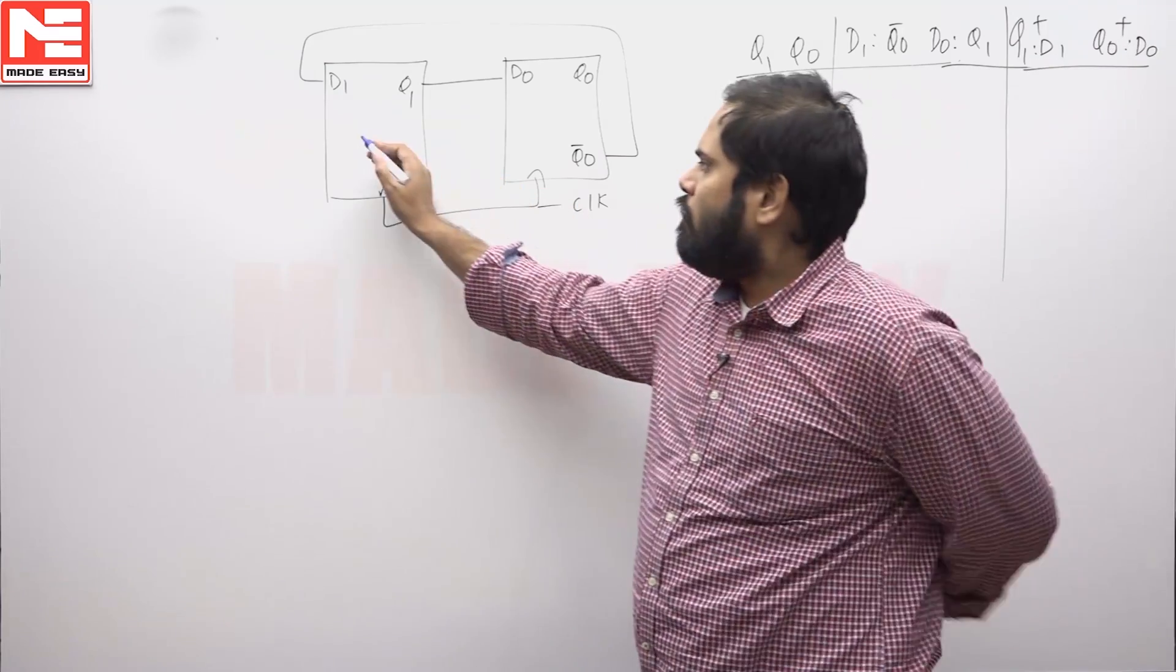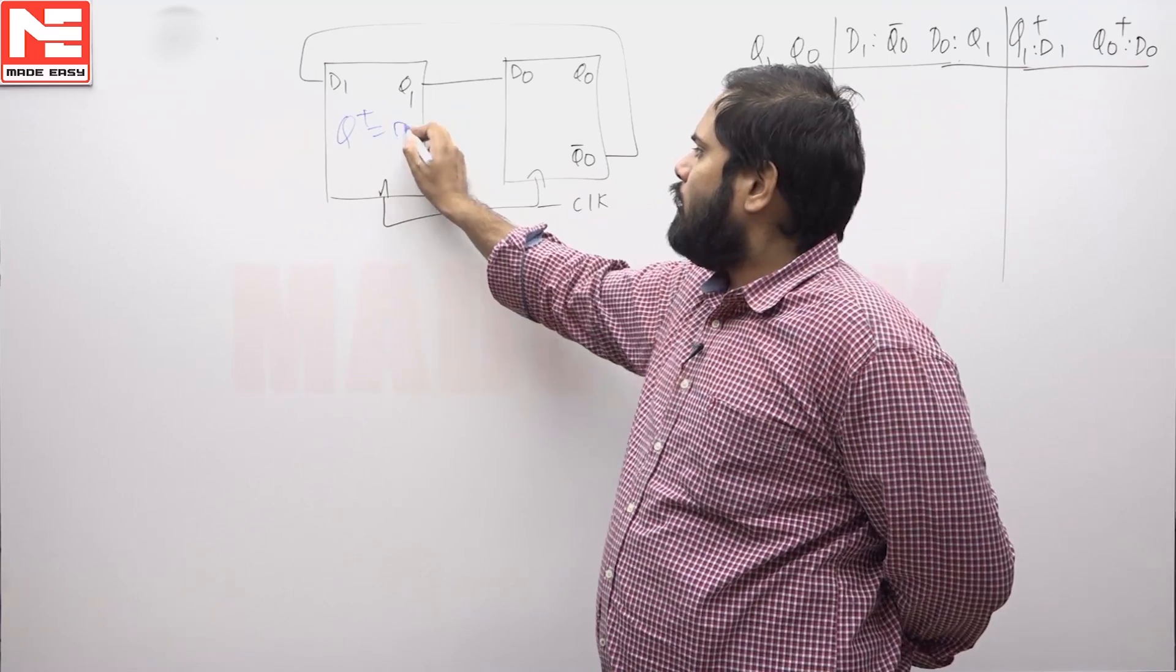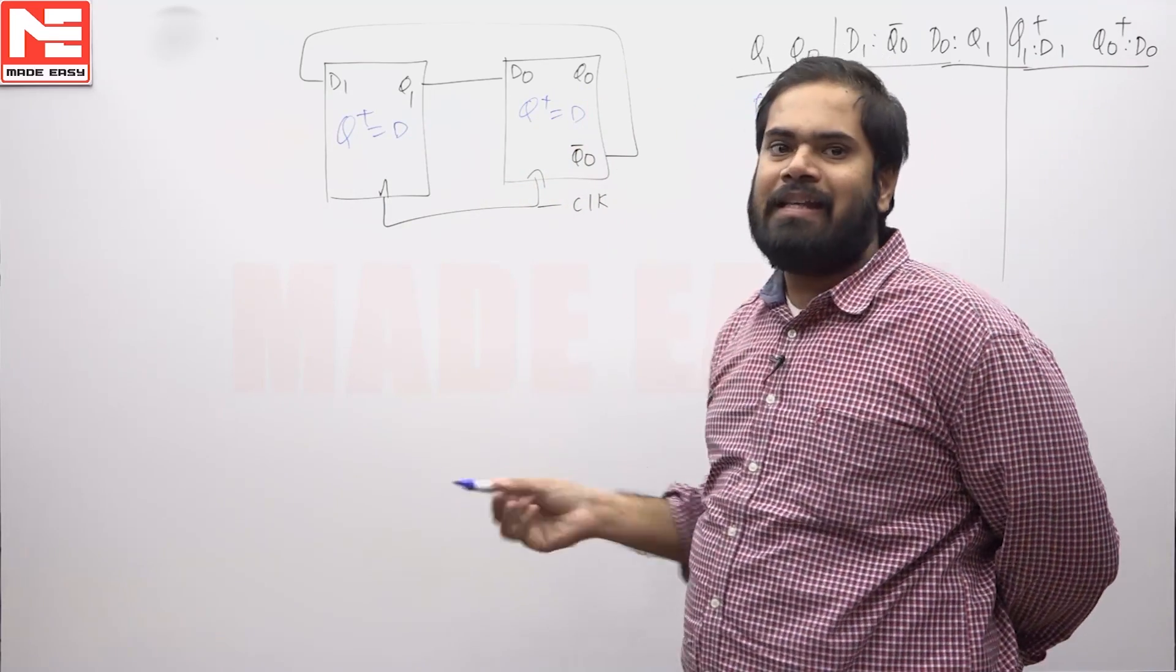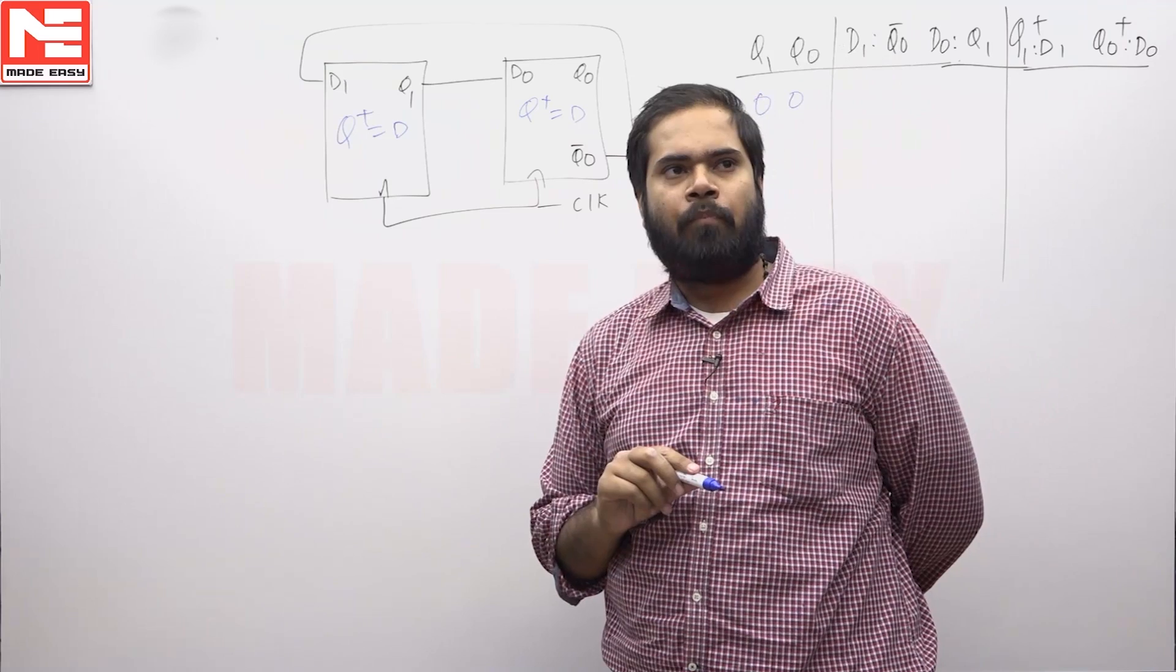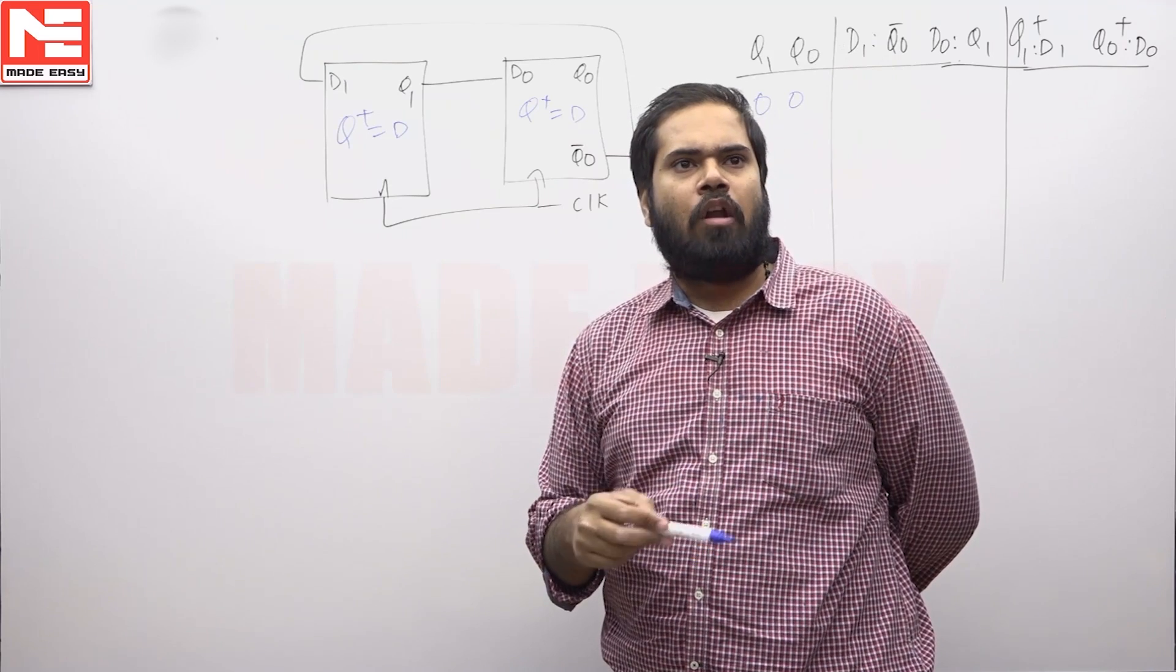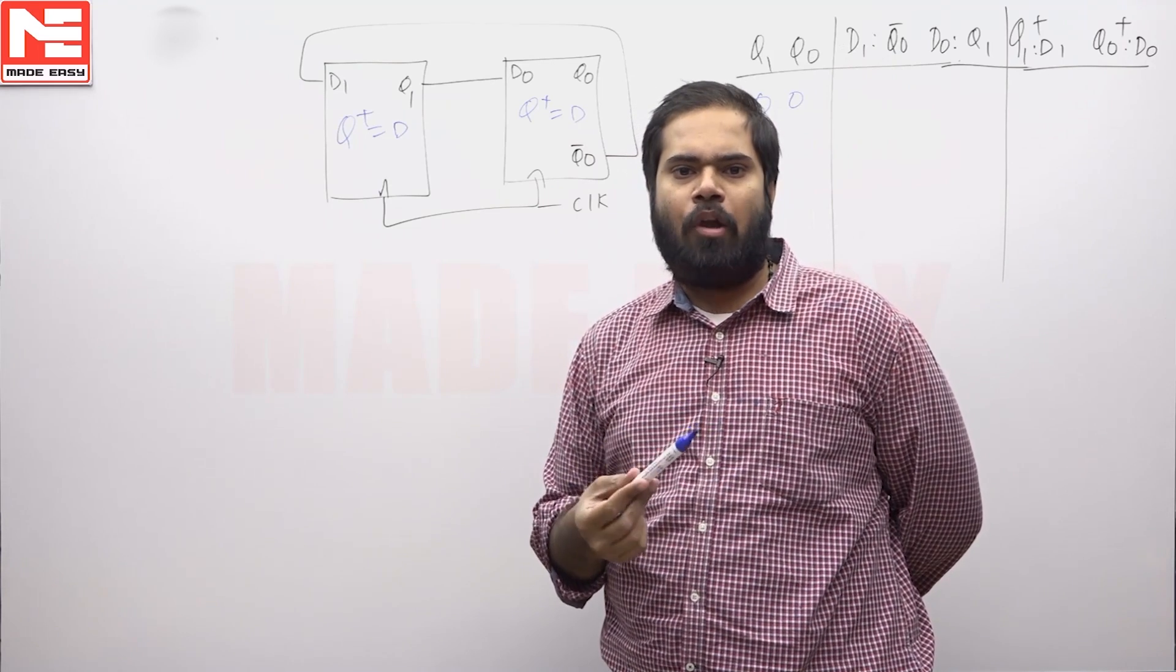all of us know that for the counter Q plus is equal to D. That means if you want to find the next state, it is sufficient to find the D input. If you know the D input, we can always find the next state, so that is a simple logic.